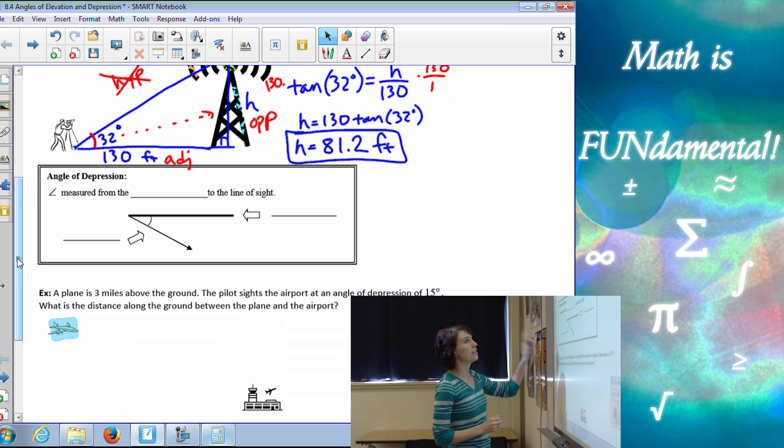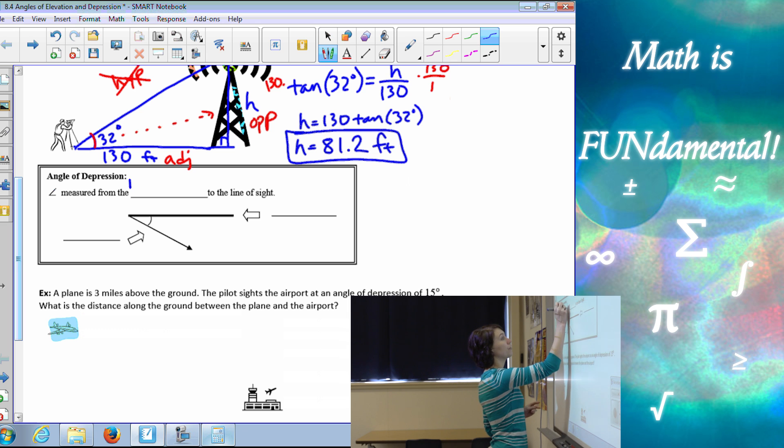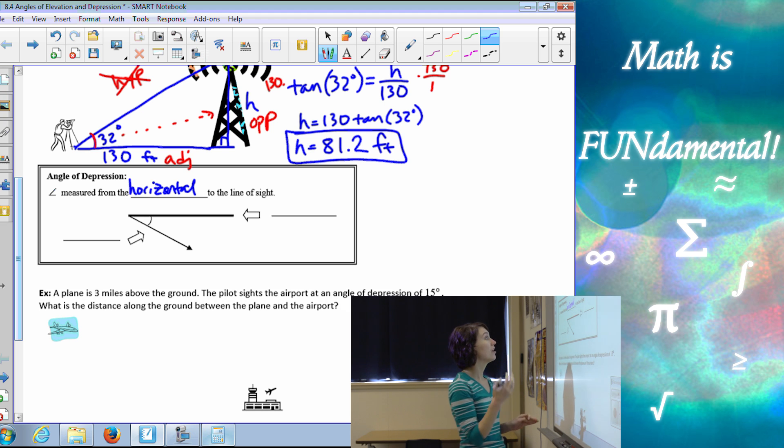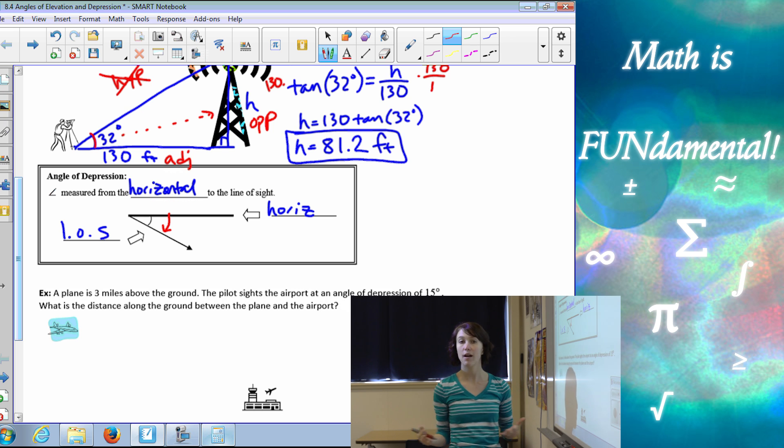Now our next definition is angle of depression, which is an angle measured from the horizontal to the line of sight. If you notice, that's the exact same definition for the other, for angle of elevation. So here I have my horizontal and my line of sight. But if you notice, from the horizontal to the line of sight goes down, which is why it's called an angle of depression.